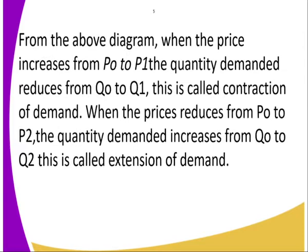From the above diagram, when the price increases from P0 to P1, the quantity demanded reduces from Q0 to Q1 — from E0 to E1. This is called contraction of demand. When the prices reduce from P0 to P2, the quantity demanded increases from Q0 to Q2 — from E0 to E2. That is what we refer to as the expansion of demand. And that is how the movement along the demand curve is explained.